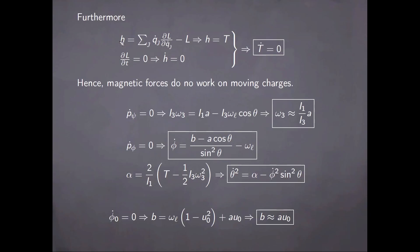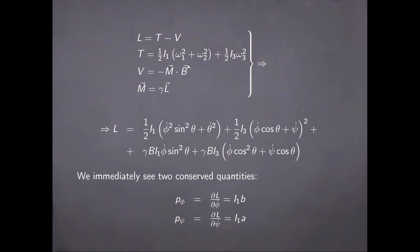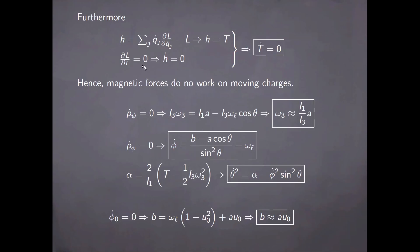Furthermore, if we look at the definition of the energy function and write it down explicitly for the system, it turns out that the energy function is just the kinetic energy. Because the Lagrangian does not explicitly depend on time, as established in chapter two, this energy function is conserved. So correspondingly, the kinetic energy of the rotating charged top is conserved. This is a statement of the fact that magnetic forces do no work on moving charges.